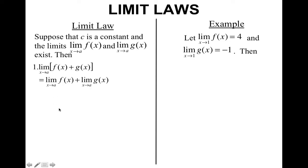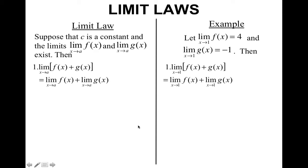Our first limit law is the addition law. Basically, if you have two functions being added together and you're taking the limit of their sum, you can split the two functions up, take the limit of the first one, take the limit of the second one, and add them together. So if we take the limit as x approaches 1 of f of x plus g of x, we can split them up. Since we know this limit is 4 and this limit is negative 1, we substitute those values in and simplify to get 3.